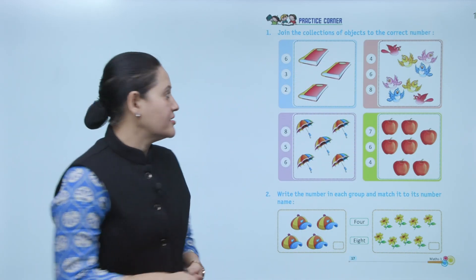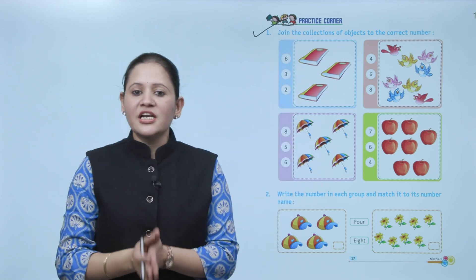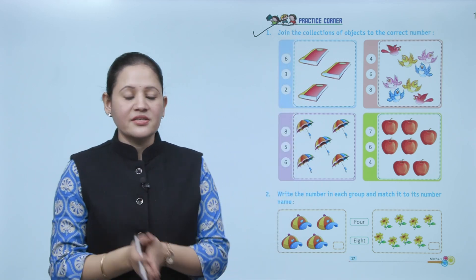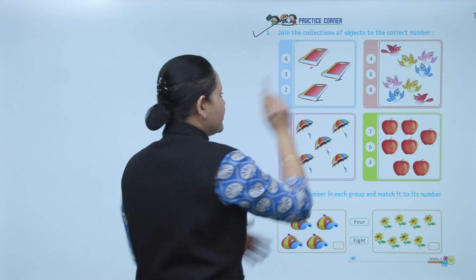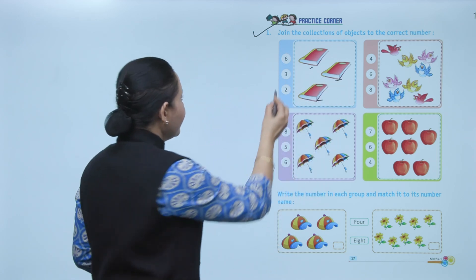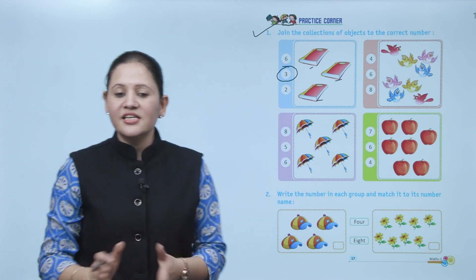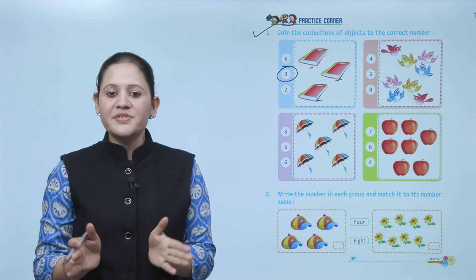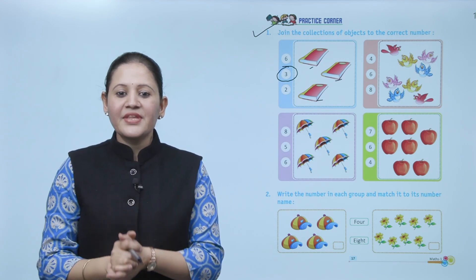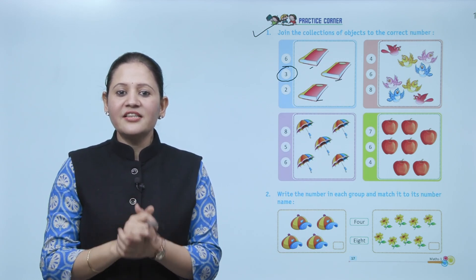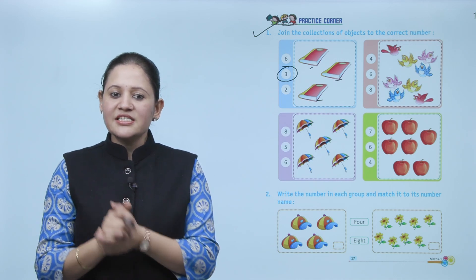Next, practice corner. Join the collection of objects to the correct number. How many books? One, two, and three — so where is number three? Circle number three. Like this you will count the object and circle the correct number. Next, write the number in each group and match it to its number name.